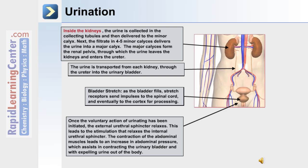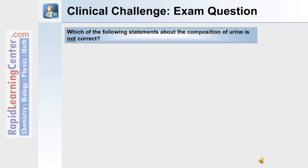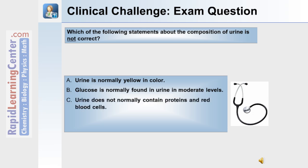Here is a clinical challenge exam question: Which of the following statements about the composition of urine is not correct? A) Urine is normally yellow in color. B) Glucose is normally found in urine in moderate levels. C) Urine does not normally contain proteins and red blood cells. D) Urine is made up of 95 percent or more of water.